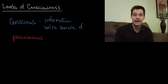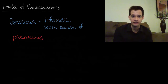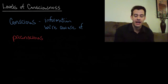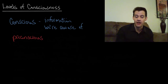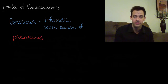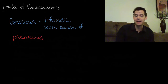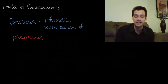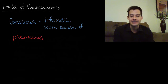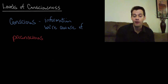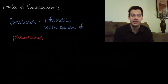Hi, I'm Michael Corayer and this is Psych Exam Review. In the previous video we looked at different types of consciousness. We compared different organisms and we saw that they can have different levels of awareness of their environment or of themselves, so we can classify those as different types of consciousness. At the very top end of that spectrum we had the full rich human experience of consciousness, which we consider to be the highest level of consciousness that we're aware of, or perhaps that we even could be aware of.